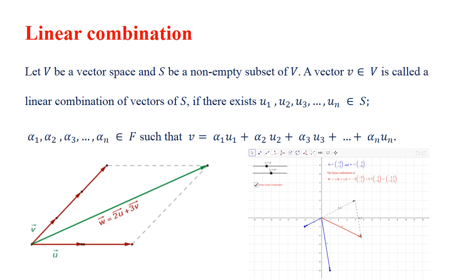Let S be a non-empty subset of V — non-empty subset meaning we collect some few vectors from this vector space V. A vector v in V is called a linear combination of vectors in S if there exist U1, U2, ..., Un in S and some scalars alpha1, alpha2, ..., alphaN taken from the field F.